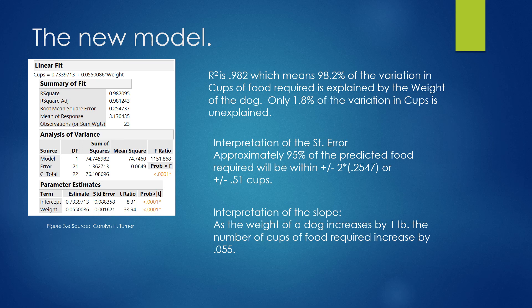R squared is at the top, under summary of fit, is .982. We multiply that by 100 to get a percentage, and so we would interpret that as 98.2% of the variation in cups of food required is explained by the weight of the dog. So if I take 1 minus .982, I get .018, or 1.8% of the variation is unexplained.